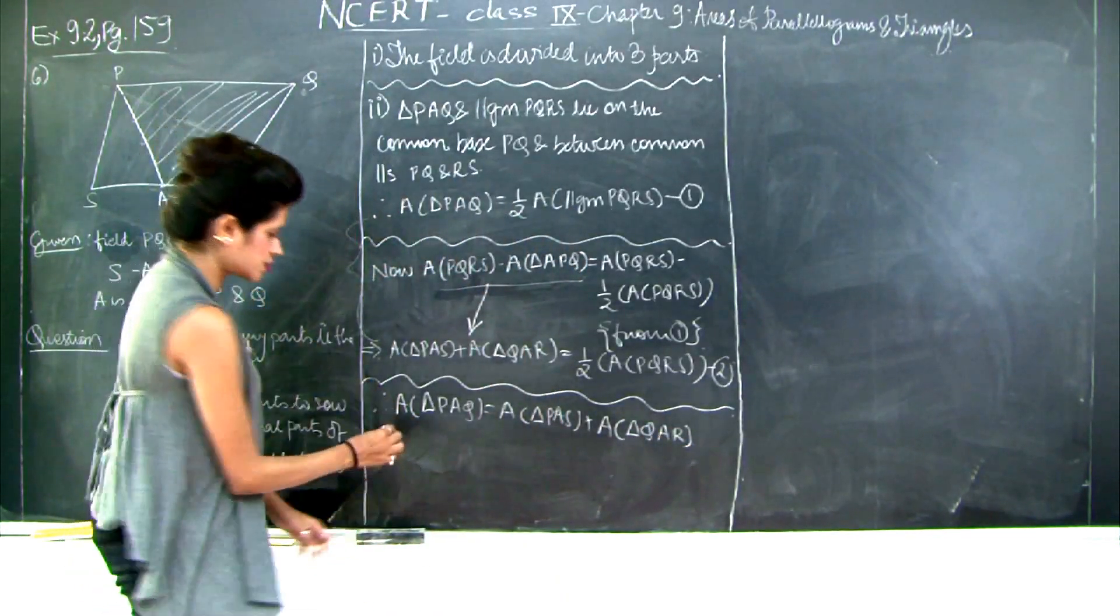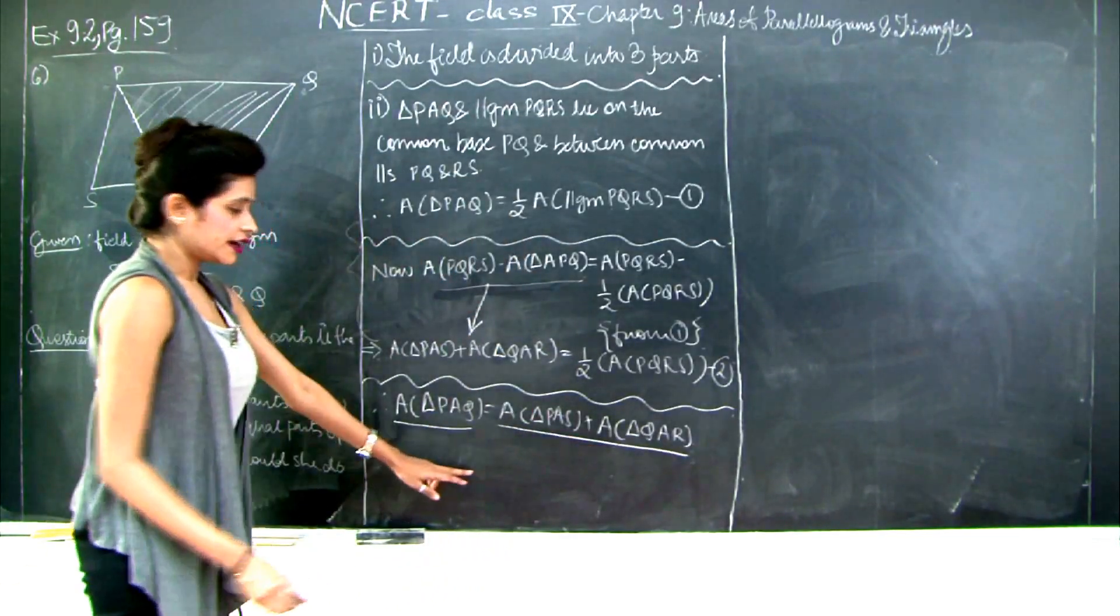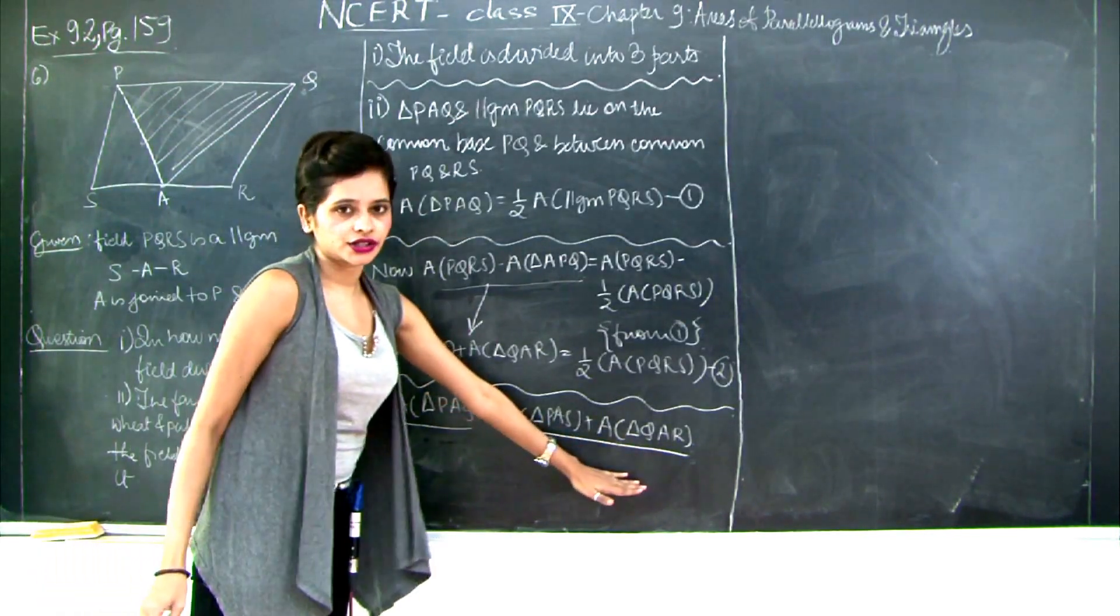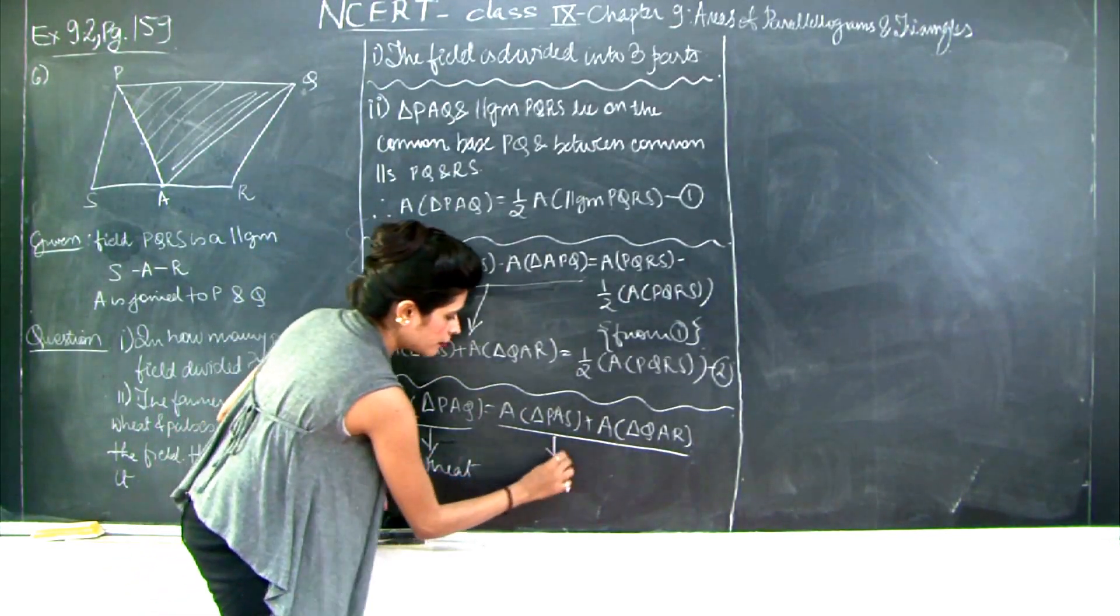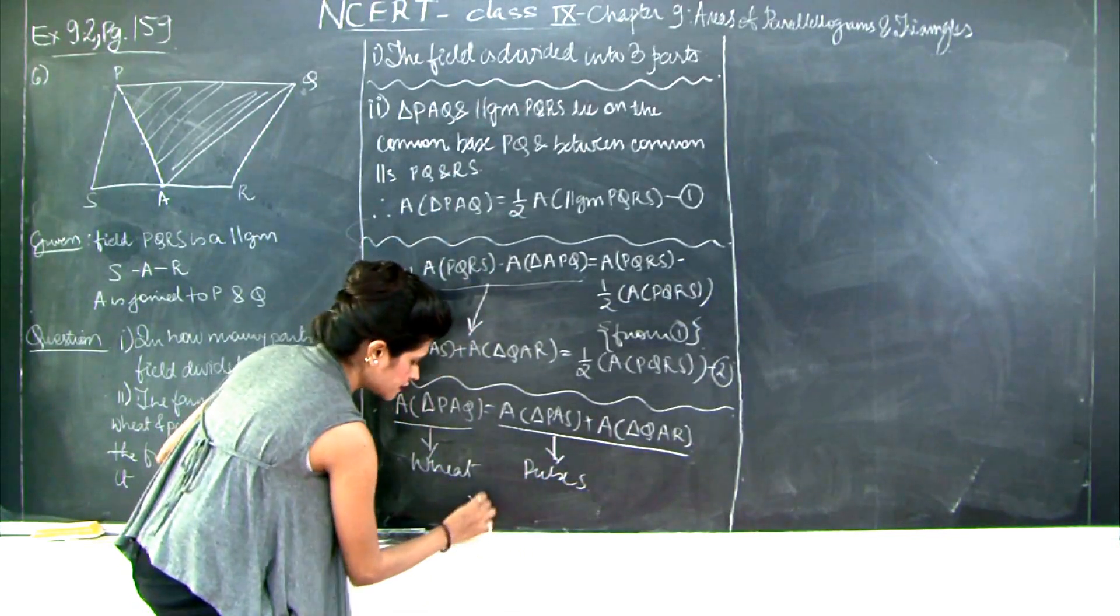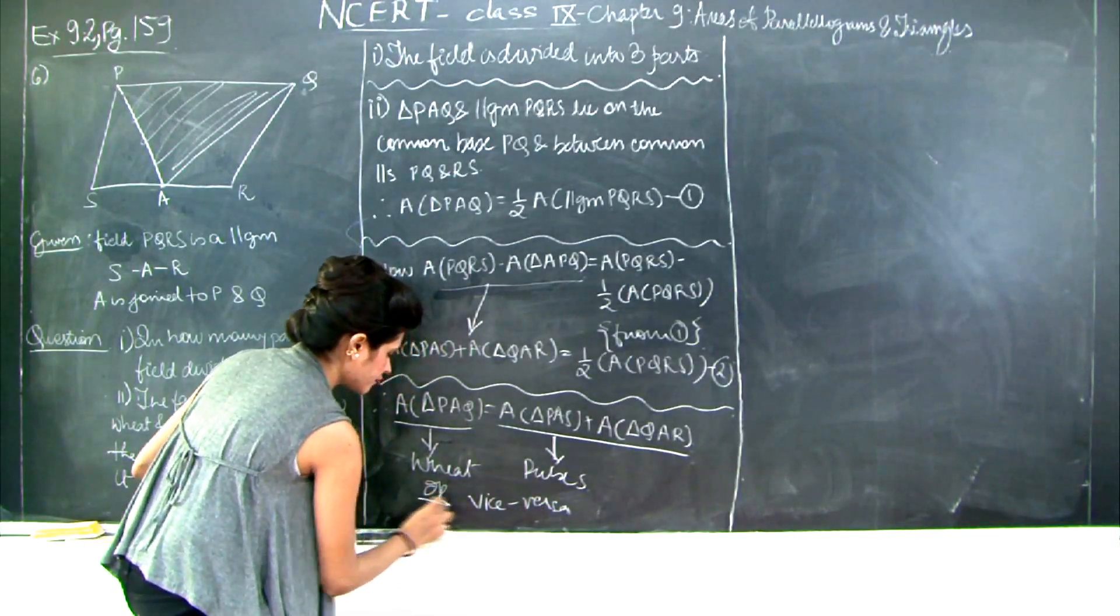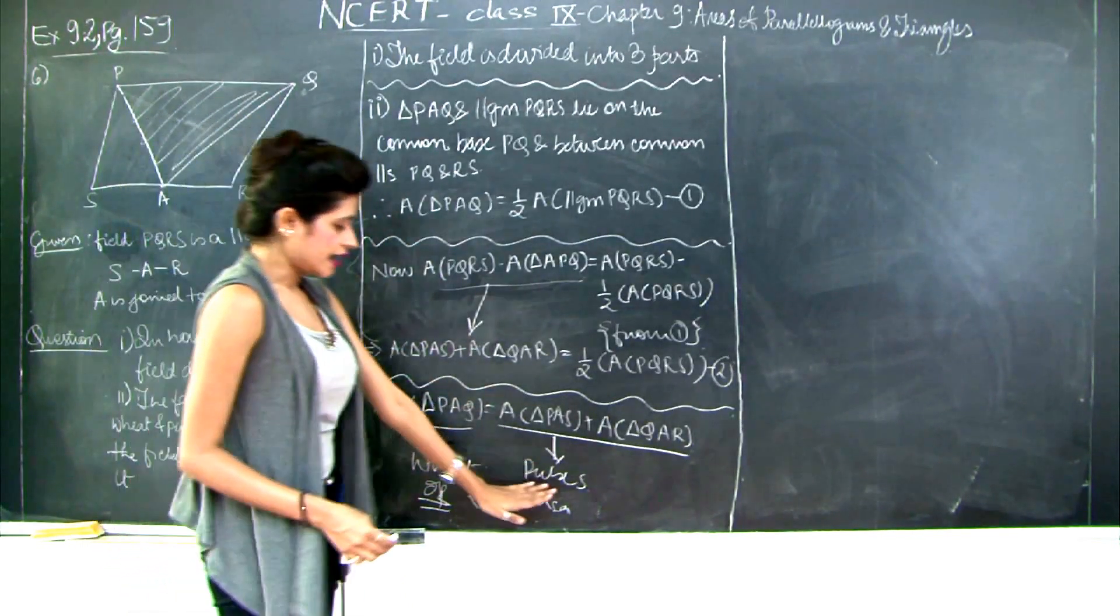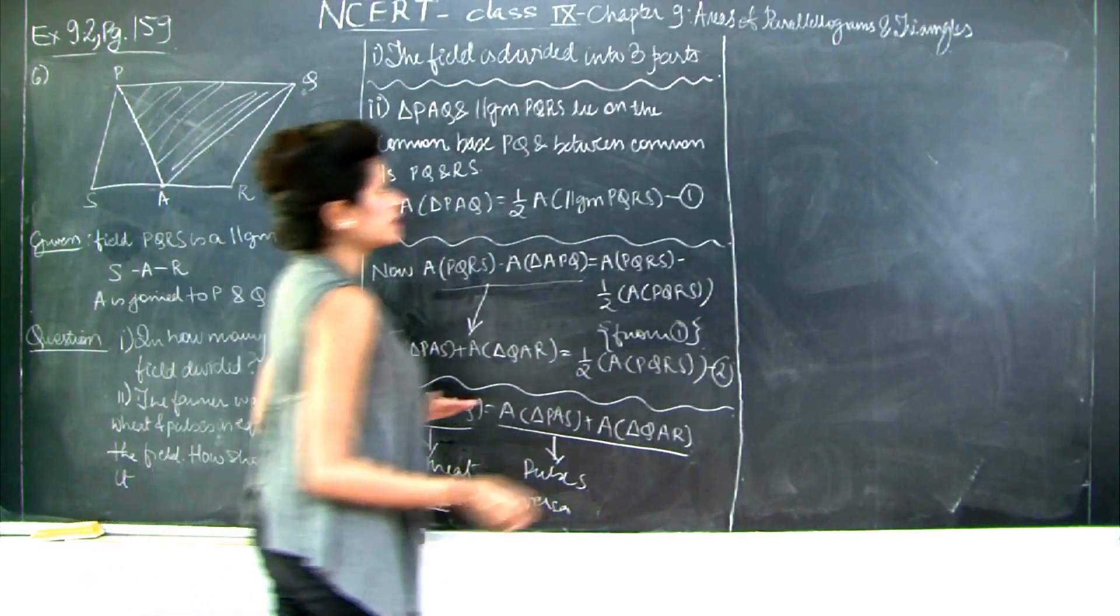Therefore area of triangle PAQ is equal to area of triangle PAS plus area of triangle QAR. So now we have two equal sections. This is half of the field and this is half of the field. Therefore the farmer can grow the wheat in this section or in this section - she can grow the wheat here or pulses in these two sections or vice versa.